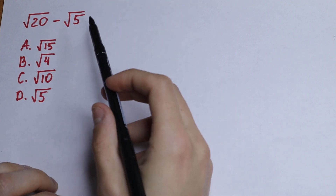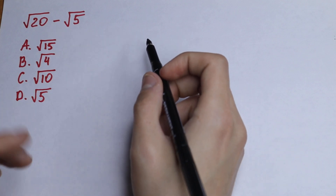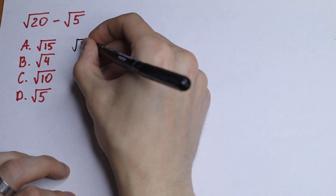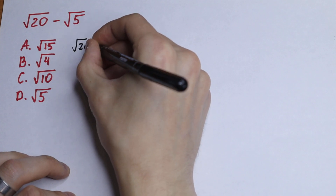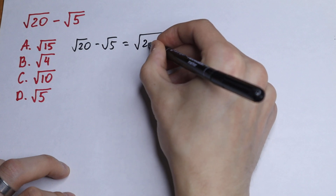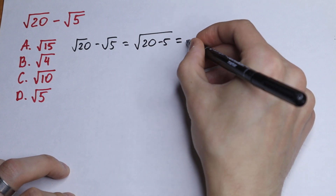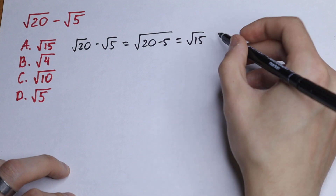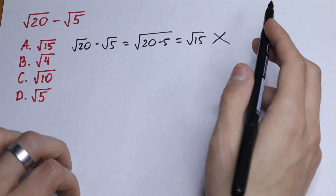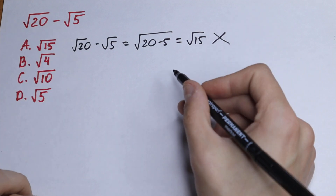At first glance, the answer might seem to be square root of 15. But this is wrong, because we cannot write that square root of 20 minus square root of 5 equals square root of (20 minus 5), giving square root of 15. This is not correct — this is the most common mistake.